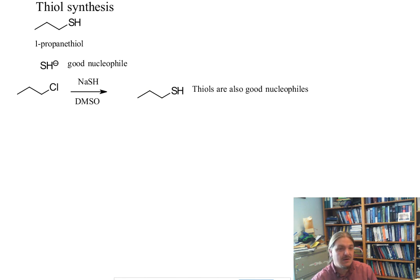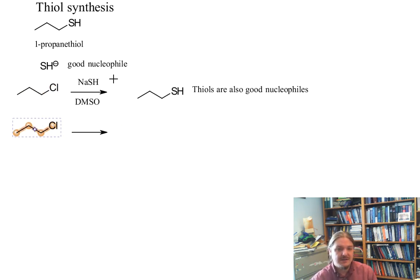And under the conditions where we might generate thiolate anion, we're going to generate this one as well. So we might deprotonate the propanethiol and get another thiolate anion. But regardless, thiols can react with alkyl chlorides and generate thioethers or sulfides.